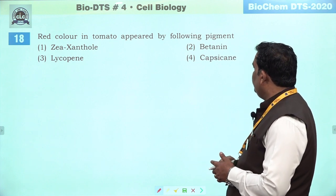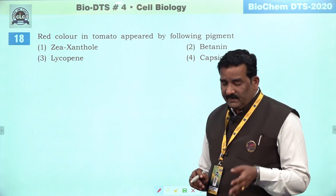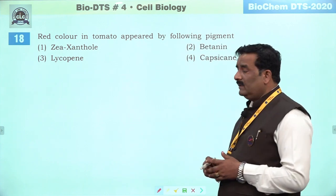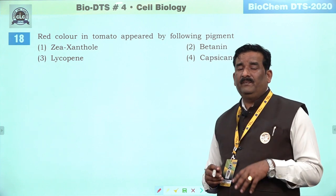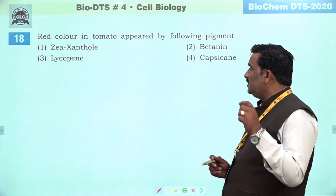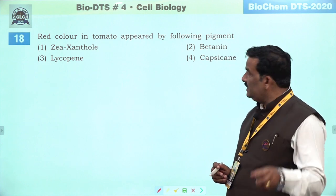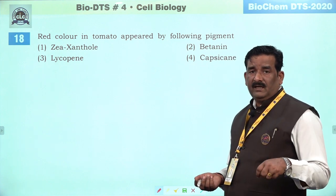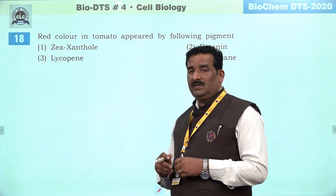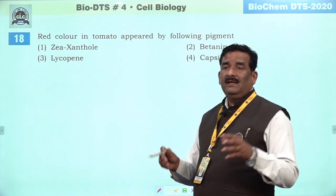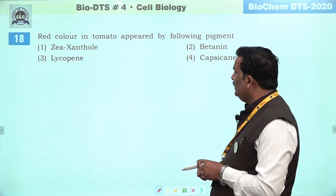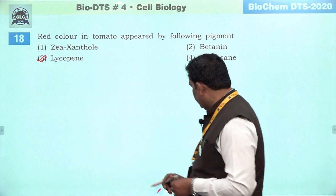Next question: red color in tomato appeared by the following pigment. Chromoplast mein kaha gaya hai ki different color in plant are appeared by carotenoid — they are generally orange-yellow in color. But some specific plants have specific pigment. Lycopene presents in tomato — issi bajah se tomato ka botanical naam Lycopersicon esculentum hai. Capsicine ki bajah se chilli ka botanical naam Capsicum naam hai. Betanine ki bajah se beetroot (chukandar) ko bola jaata hai. Lycopene — PMTB mein bhi aa chuka hai — tomato mein red color ke liye responsible hai. Third is the right answer.